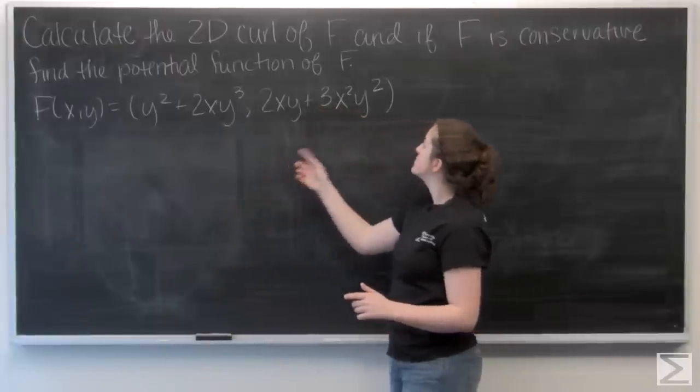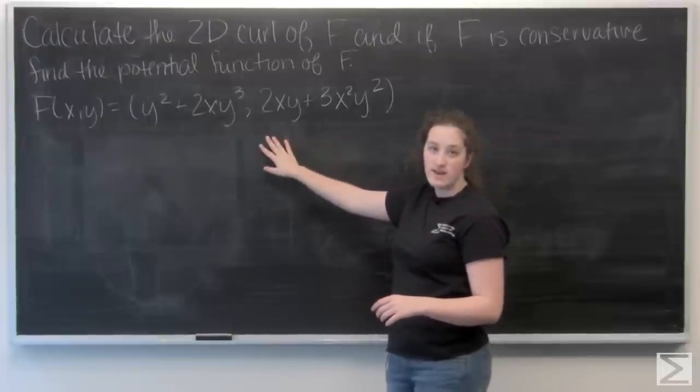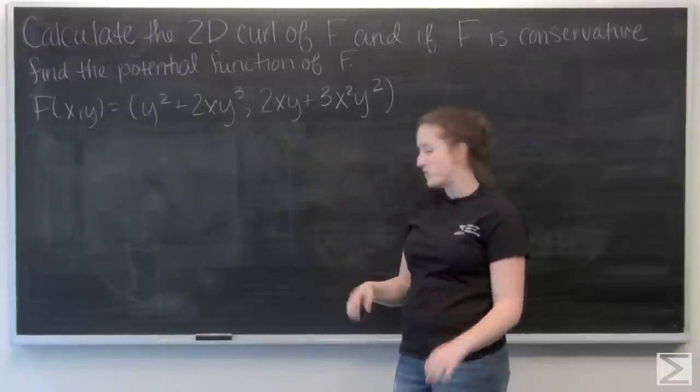For this problem, I'm asked to calculate the two-dimensional curl of this vector f, and then if f is conservative, to find the potential function for it.